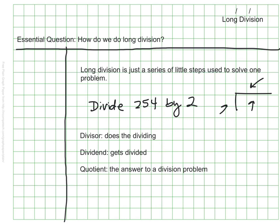And the last term is quotient. And, of course, the quotient is the answer to a division problem. In long division, it looks like this. The dividend is here inside the symbol. The divisor is on the outside, and the quotient will be written on the top.